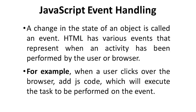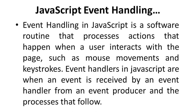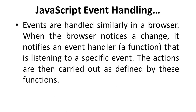A change in the state of an object is called an event. HTML has various events that represent when an activity has been performed by the user or browser. When a user clicks, JavaScript code executes the task to be performed on the event. Event handling in JavaScript is a software routine that processes actions when a user interacts with a page, such as mouse movements and keystrokes. When a browser notices a change, it notifies an event handler — a function listening to a specific event.